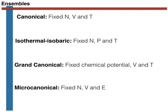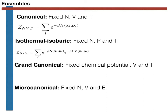The partition function for the canonical ensemble is given by the corresponding expression. In the isothermal-isobaric ensemble you fix the number of atoms, with constraints on the average value of the volume and the average value of the energy, introduced through Lagrange multipliers related to the pressure and temperature. In the grand canonical ensemble only the volume is fixed, with constraints on the average number of atoms and average energy, introducing Lagrange multipliers related to the chemical potential and the temperature.